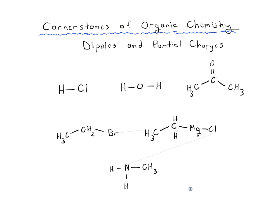Before getting into dipoles and partial charges, remember that even though we draw out these structures like this, we have implicit or hidden lone pairs on some of these atoms. It helps to draw these out so we understand what's there and what isn't, because oftentimes we won't draw them in — it takes time. Just because you skip over drawing them doesn't mean they're not there.